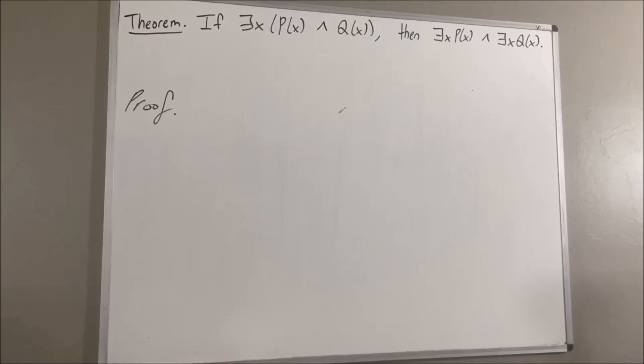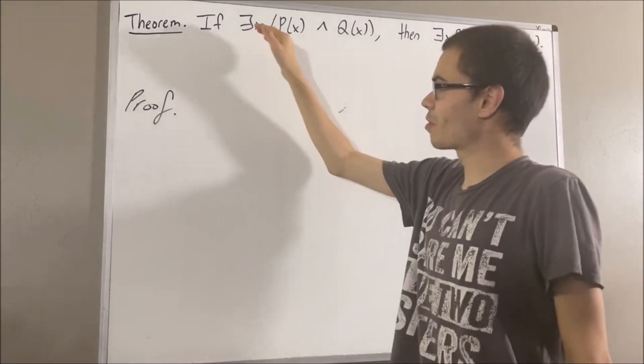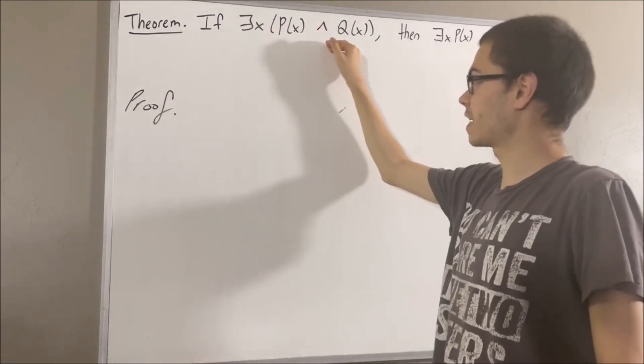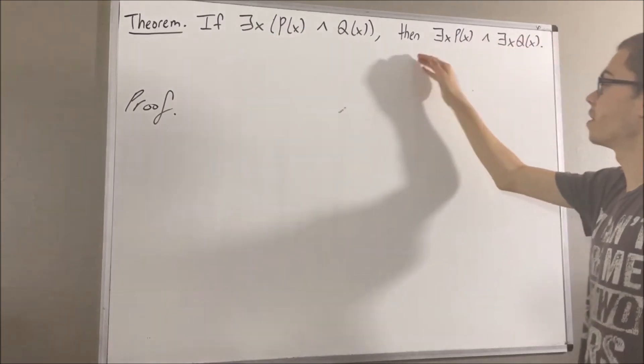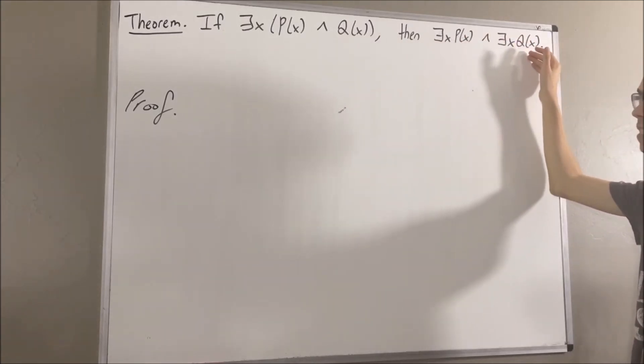Hello! In this video, we are going to prove the following theorem. If there exists an x such that p of x and q of x, then there exists an x such that p of x, and there exists an x such that q of x.